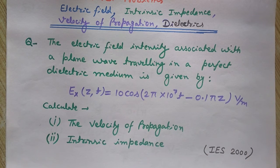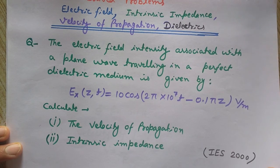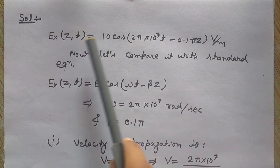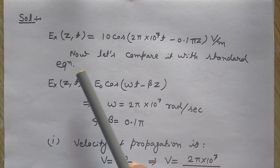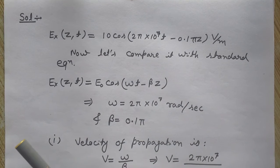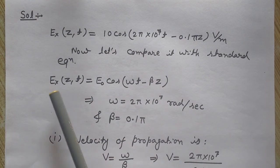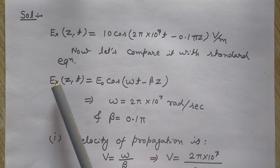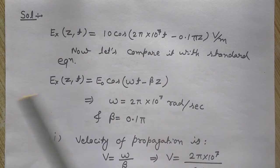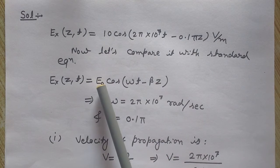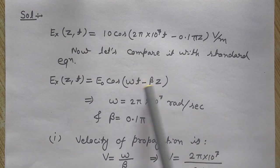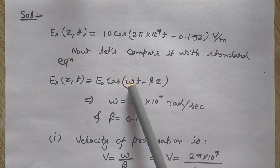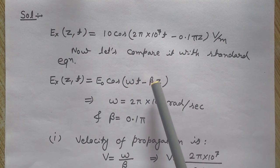Let's see the solution. Ex(z,t) is the equation we have. Now let's compare it with the standard equation. The standard equation is Ex(z,t) = E₀cos(ωt - βz), where E₀ is the amplitude (10 in our case), ω is the angular frequency, and β is the phase constant.